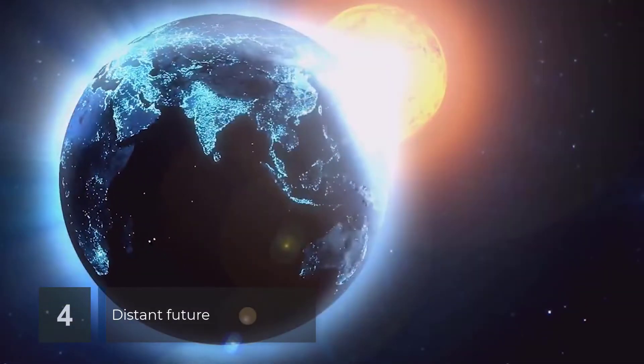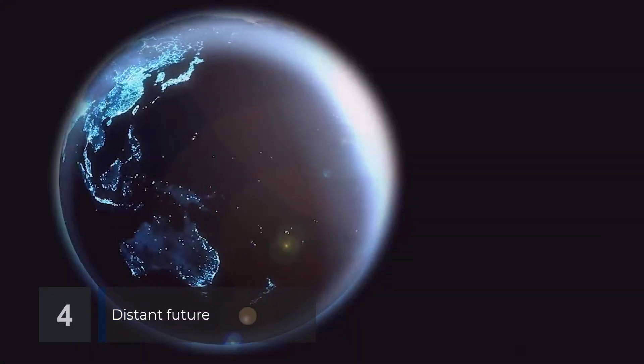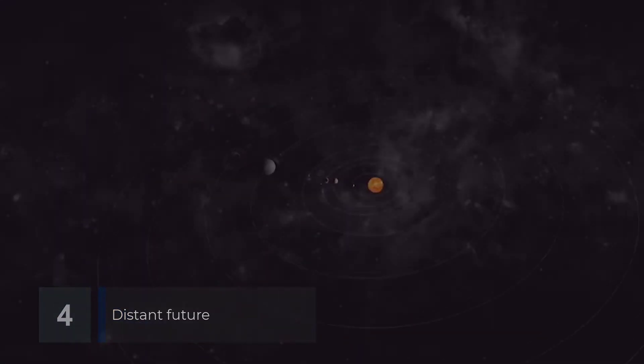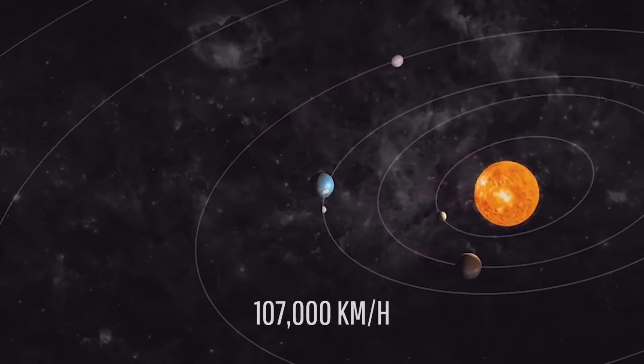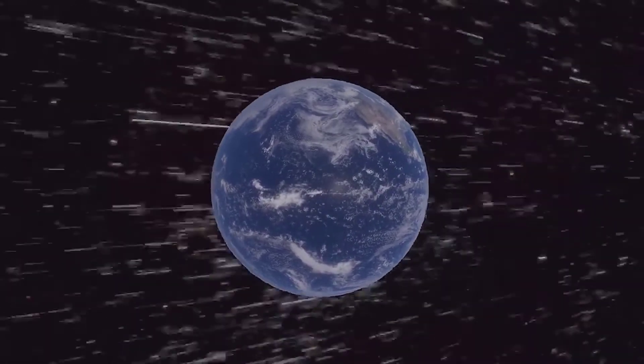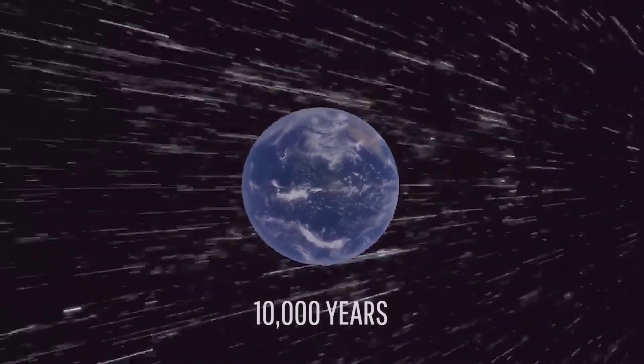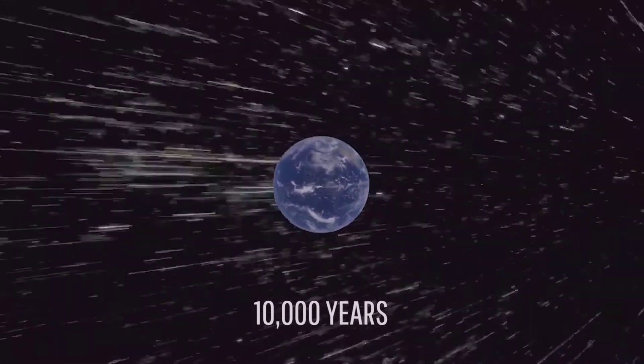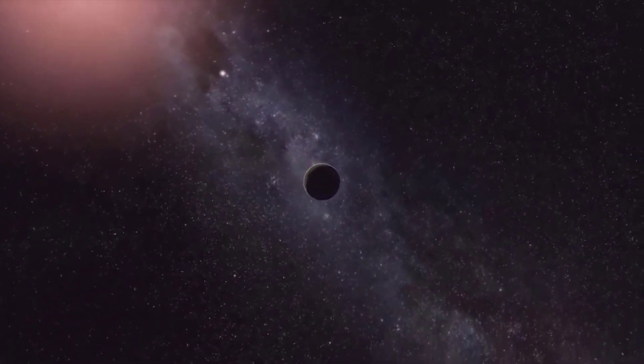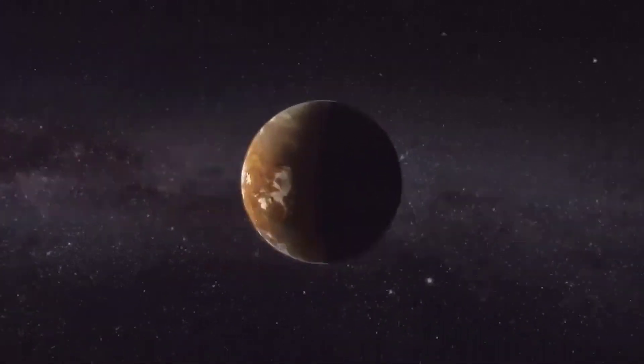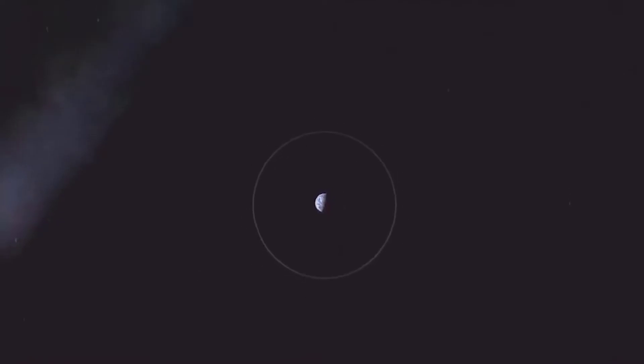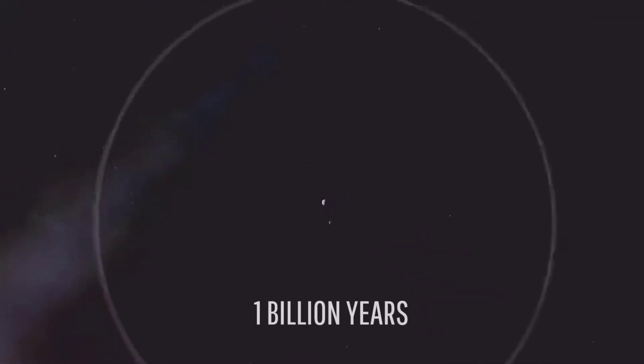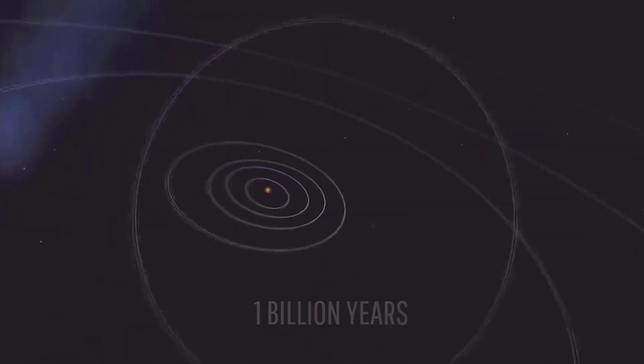If the sun vanished, Earth would catapult into the void at its current orbital velocity of 67,000 miles per hour. It would take about 10,000 years for it to travel one light year. The distance to our nearest star, Alpha Centauri, is 4.3 light years. With that in mind, it would take 1 billion years for Earth just to leave the Milky Way galaxy.